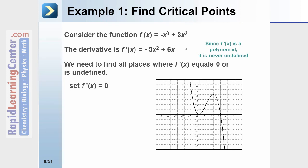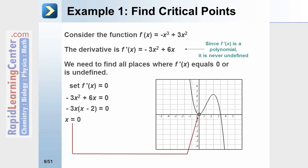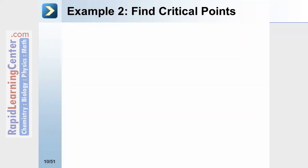We'll set f′(x) equal to 0 and solve: −3x² + 6x = 0. We get two answers: x = 0, which is one critical point on the graph, and x = 2, which is the other critical point on this graph.